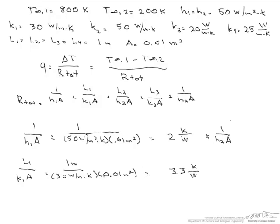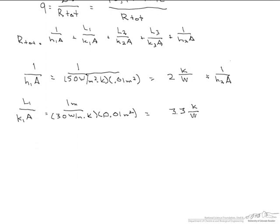When we do this for all of the resistances, and it might be good practice to figure them out yourself, the first one is 2 plus 3.3 plus 2 plus 5 plus 2, all in Kelvin divided by watts. That equals 14.3 Kelvin divided by watts.